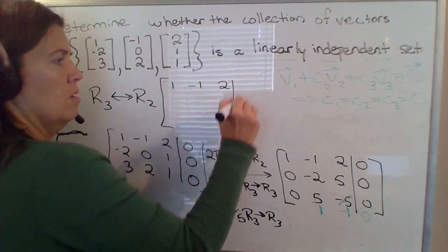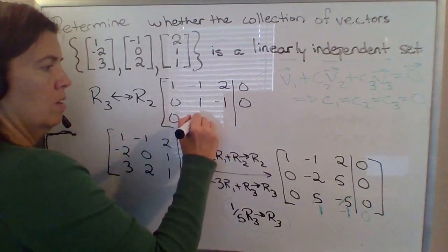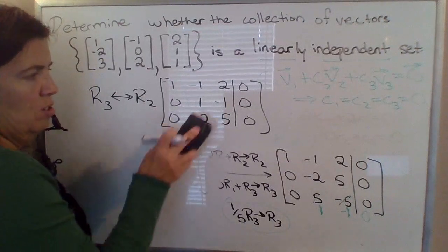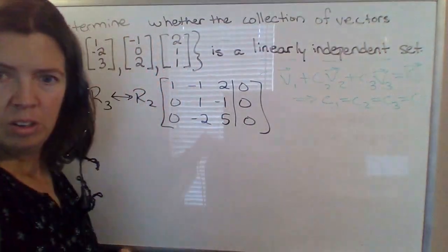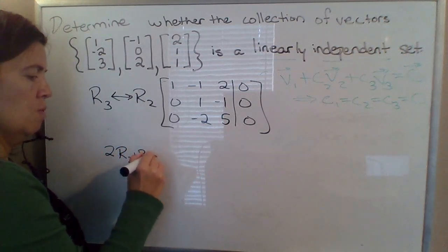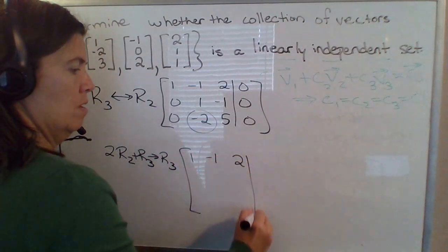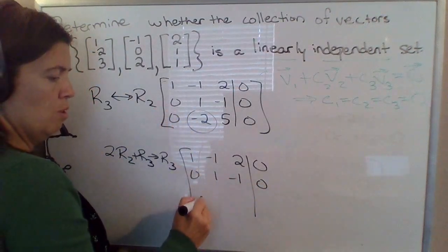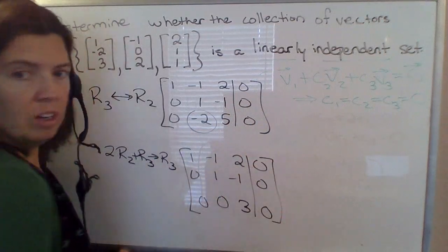And that I will write up here. So row 1 stays the way it was. Swap this. 0, 1, negative 1, 0 up here. And now we can do 2 times row 2 plus row 3. So now we can do 2 row 2 plus row 3 becomes the new row 3. That'll get rid of this 2 right here. So we'll have 0 plus 0. 2 plus negative 2. 2 times this. So negative 2 plus 5. And 0 plus 0.